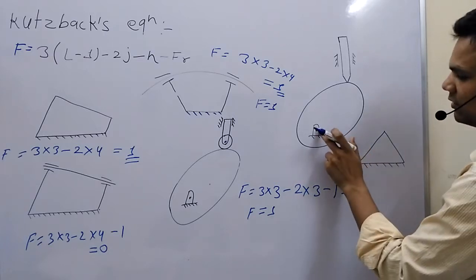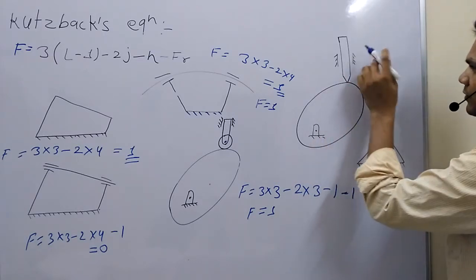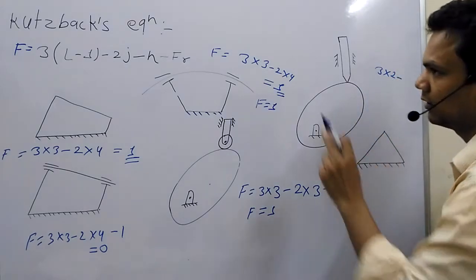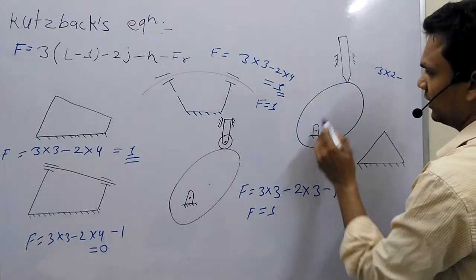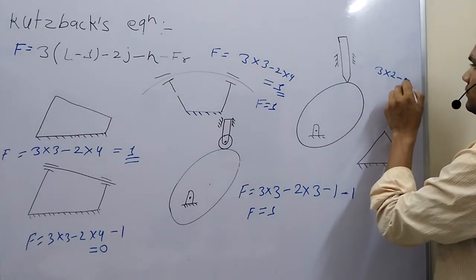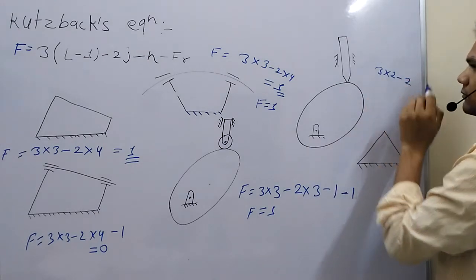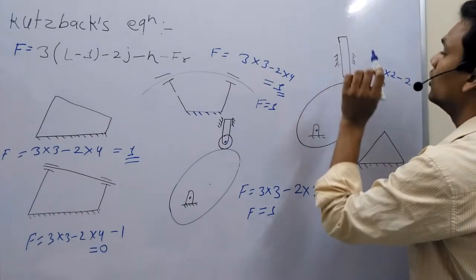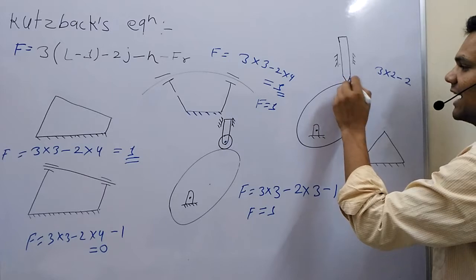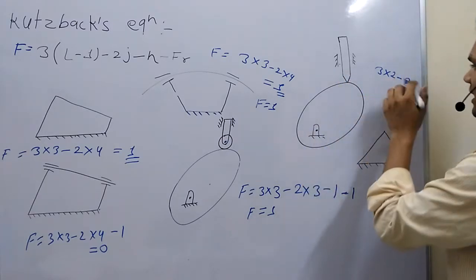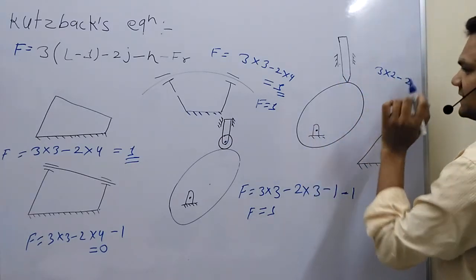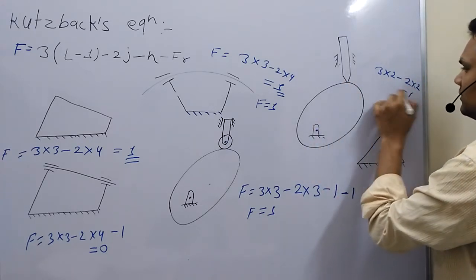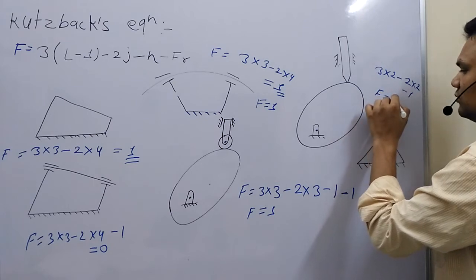Now in this case, we consider one, two, three. So number of links: three into two, minus. Number of joints: one, two, three. This is a higher pair — a point or line contact, this is an example of a higher pair. So you can see: one, two, into two. This is the higher pair, minus one. F is equal to one.